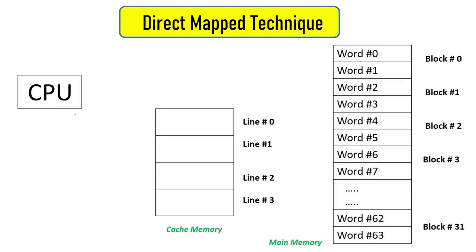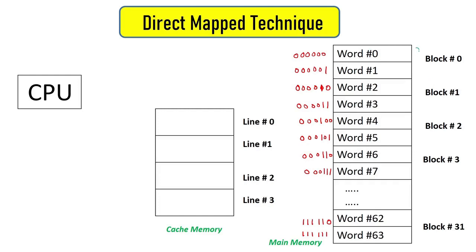We understood that main memory is organized in the form of blocks. In our example, each block contains two words: word 0 and word 1 are inside block 0, block 1 contains word 2 and 3, and so on. The block size for main memory is equal to two words. For now, we assume one word equals one byte, although a word can be two, four, or eight bytes. Cache is organized in the form of lines — line 0, 1, 2, and 3 — so there are four lines in cache memory.